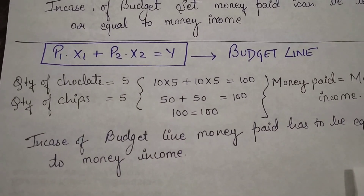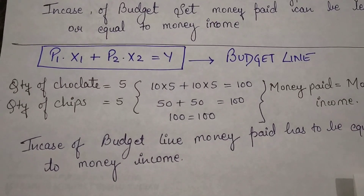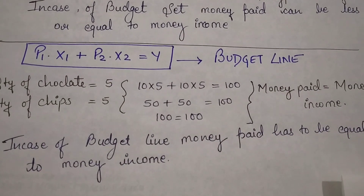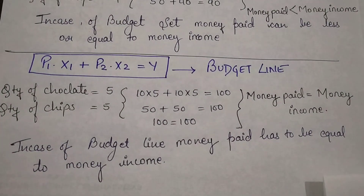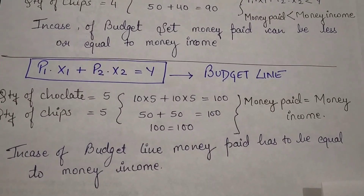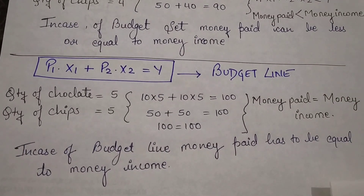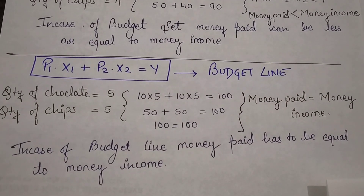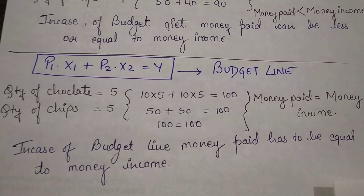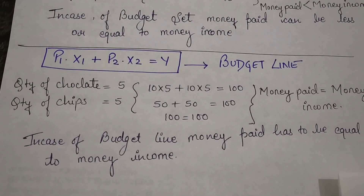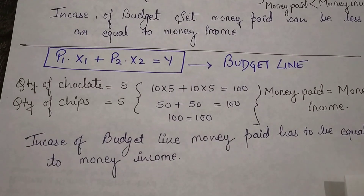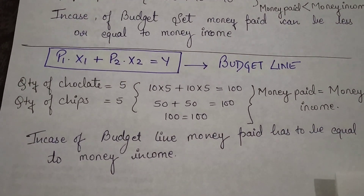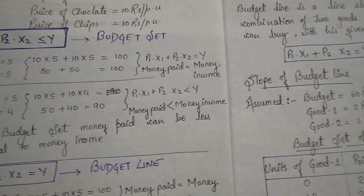In the budget line example: quantity of chocolate 5 units, quantity of chips 5 units - 10 into 5 plus 10 into 5 equals 100, so 100 equals 100, meaning money paid equals money income. We spent the complete 100 rupees. In case of budget line, money paid has to be equal to money income - we can't save a single rupee and we can't spend 101 rupees extra. We must spend exactly 100.